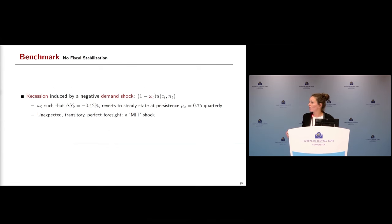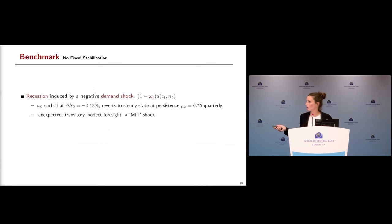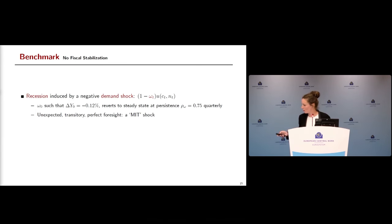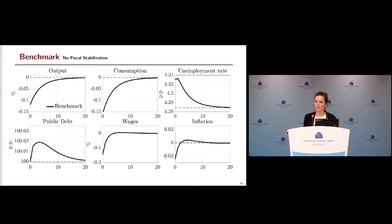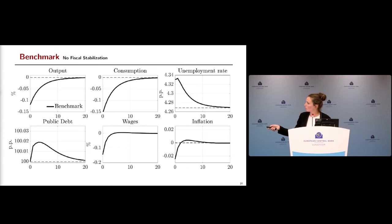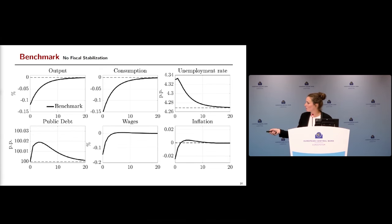The recession is modeled via a negative demand shock omega_t, which reverts to steady state with quarterly persistence of 0.75. The shock is unexpected, transitory, and solved with perfect foresight — a standard MIT shock. This generates a standard recession: output and consumption fall, unemployment rises, wages decline, and inflation falls.